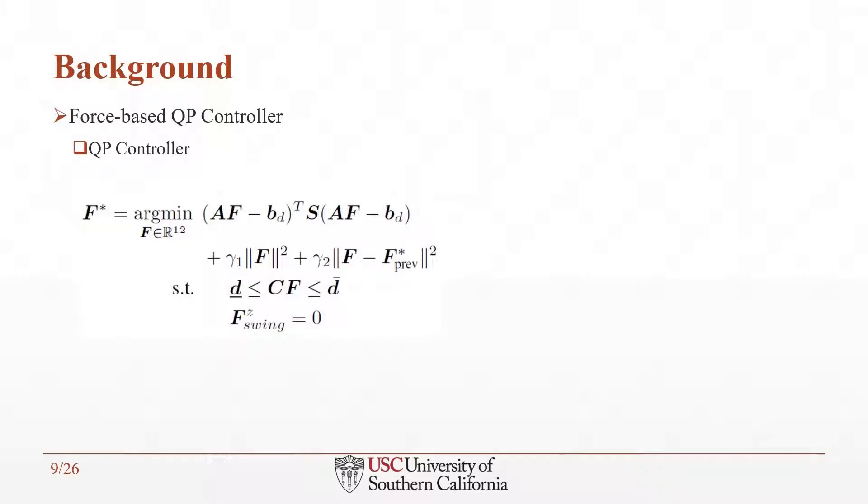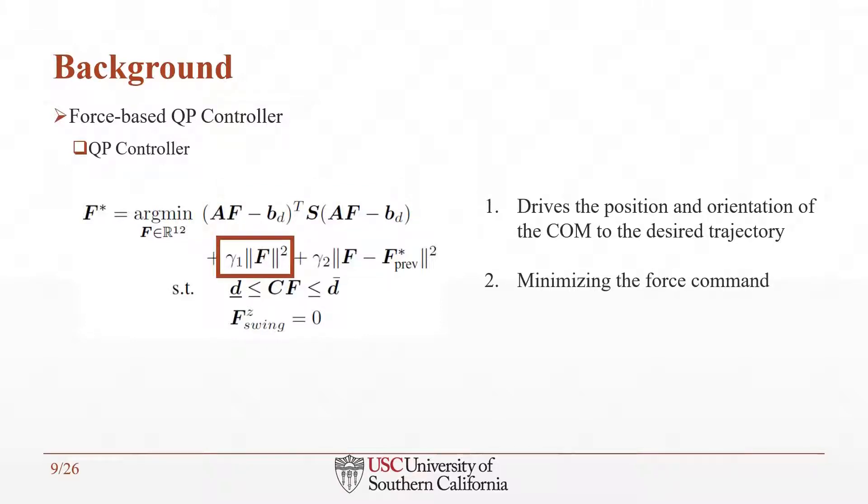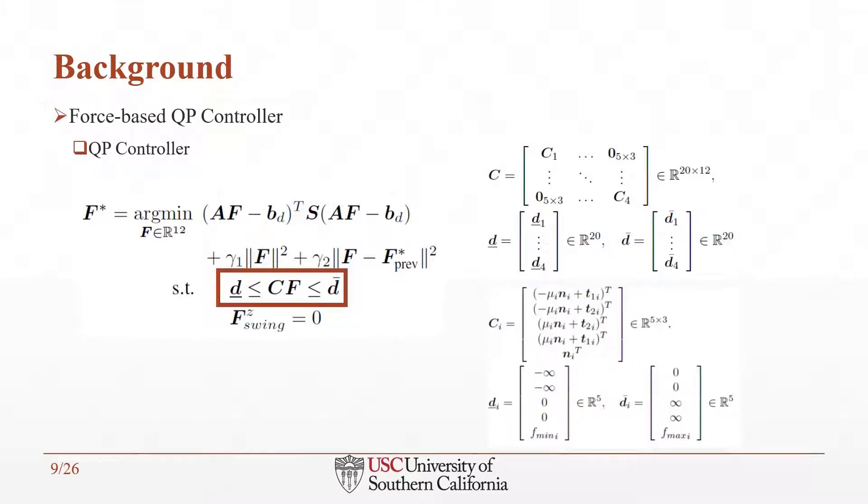This is how we calculate the desired force through QP optimization, which includes terms that consider three goals. The first one drives the position and orientation of center of mass to the desired trajectory. The second one minimizes the force command, and the last one filters the change of the current solution with respect to the solution from previous steps. The priority of these three goals will be adjusted by weight matrix S and scalar gamma 1 and gamma 2. The constraint which is defined in this optimization guarantees that all computed force lies in the friction cone to prevent slipping during walking, and the value of the computed force won't exceed the maximum allowable value. These values for C matrix and D vectors are equivalent to the common friction constraint rule that we know before.